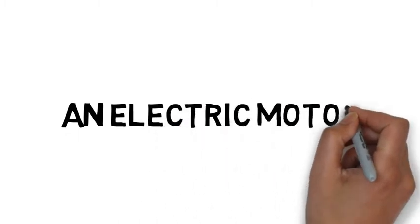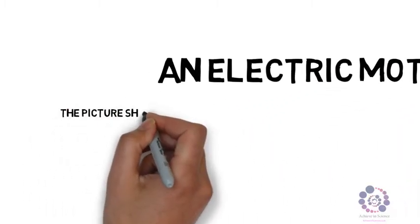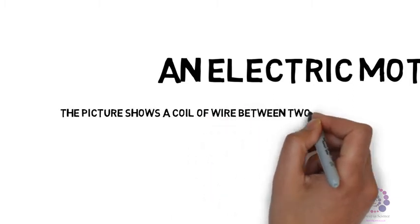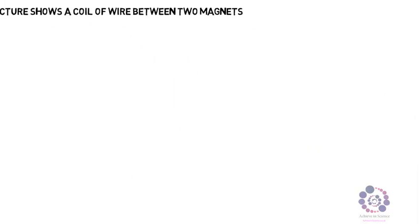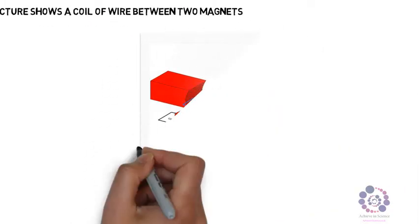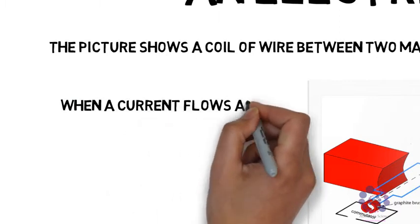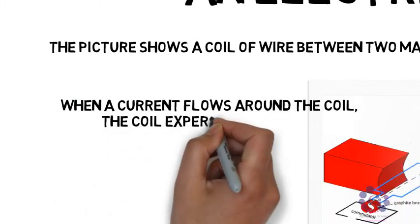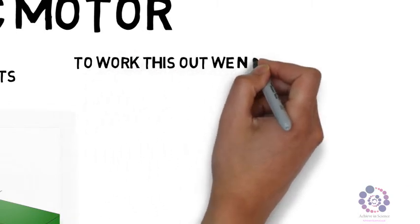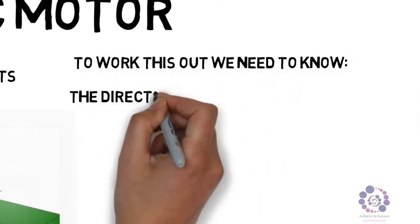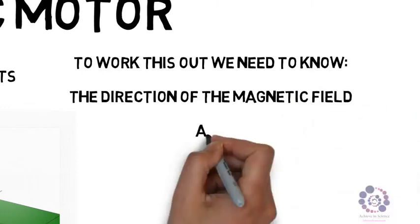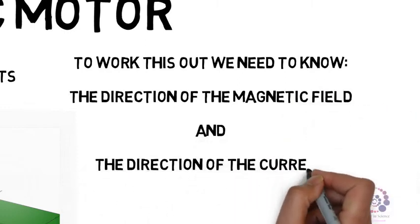Now let's have a look at an electric motor. The picture shows a coil of wire between two magnets. When a current flows around this coil, the coil experiences a force. In order to work out the direction, we also need to know the direction of the magnetic field and the direction of the current.